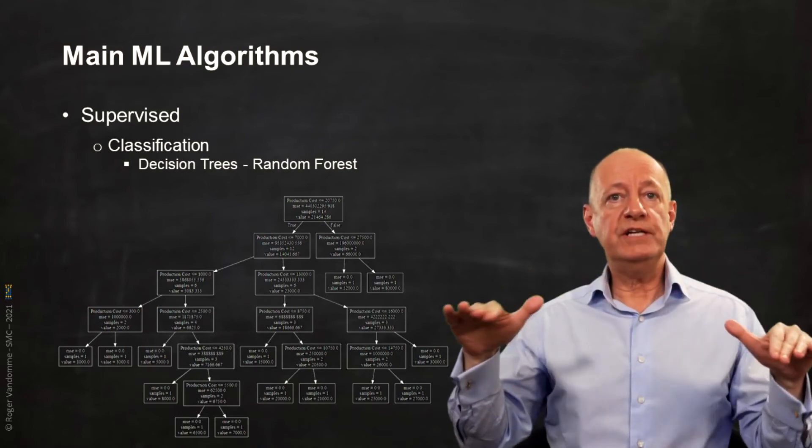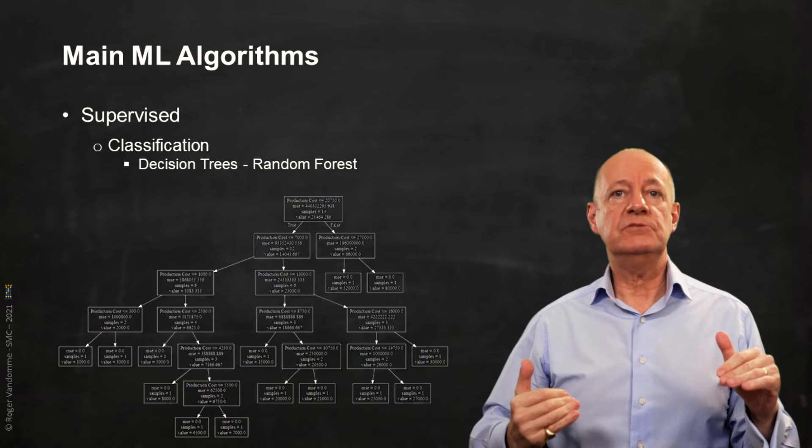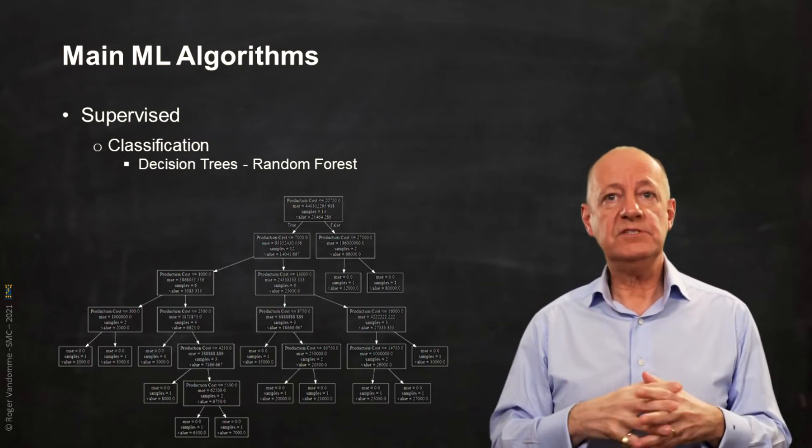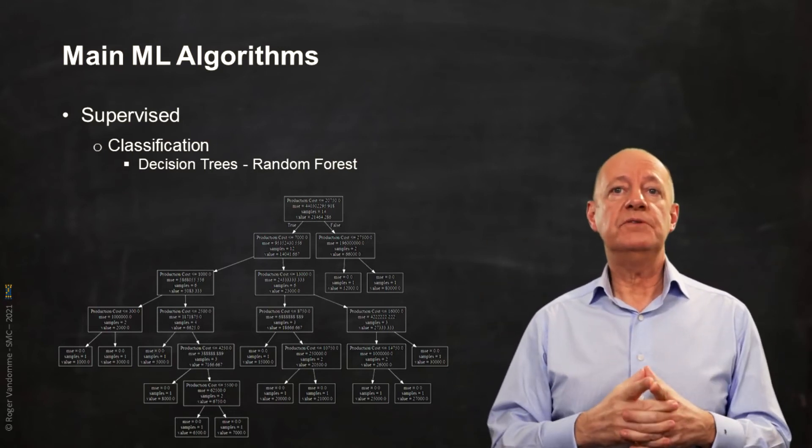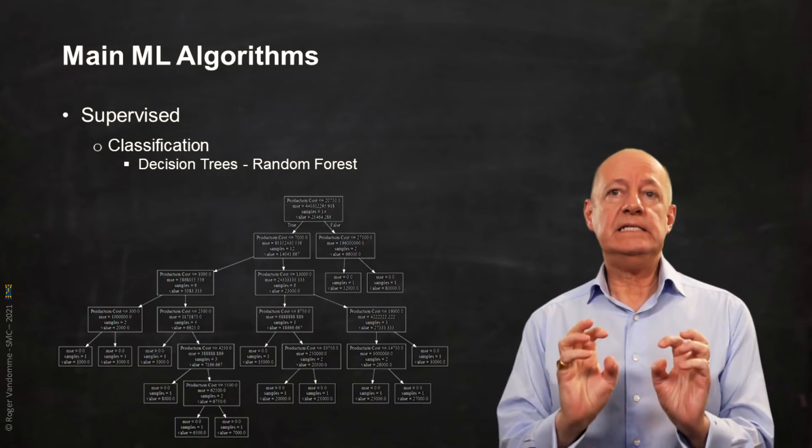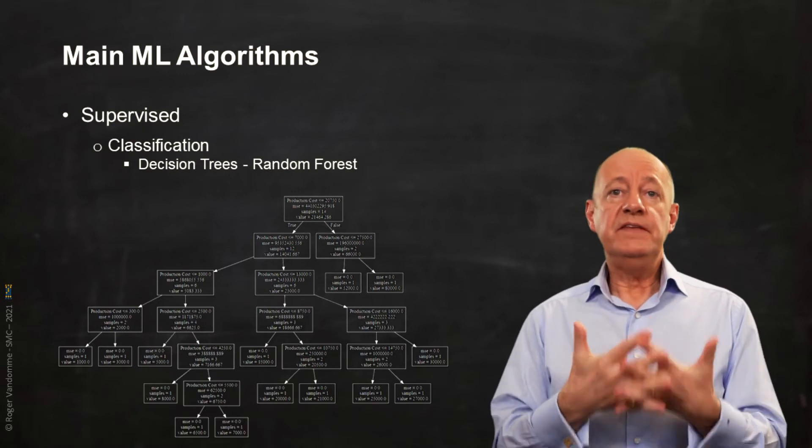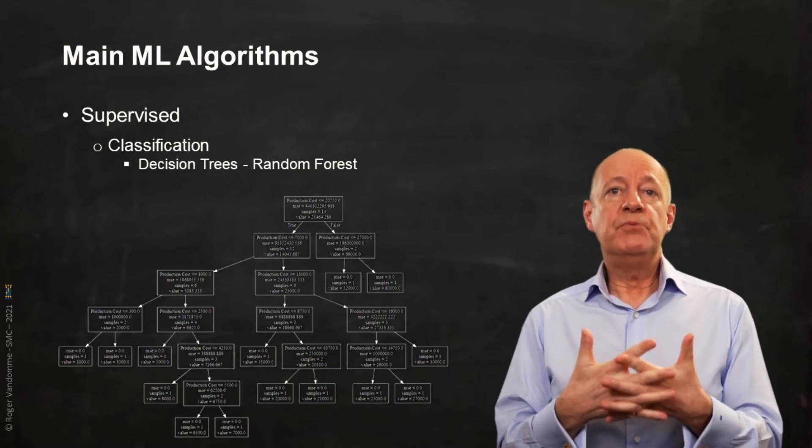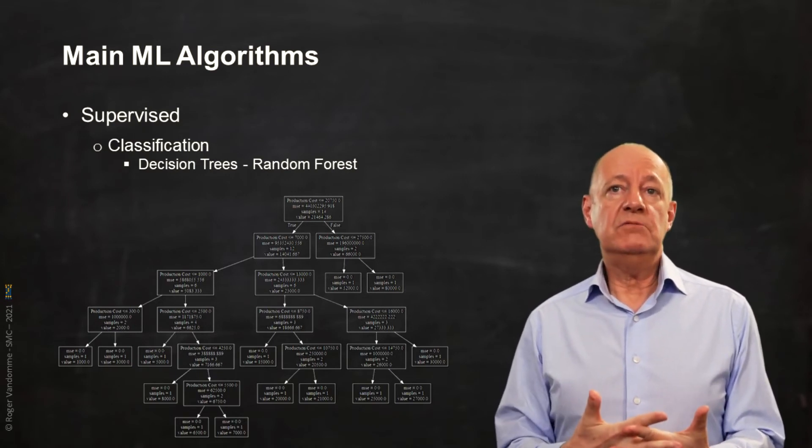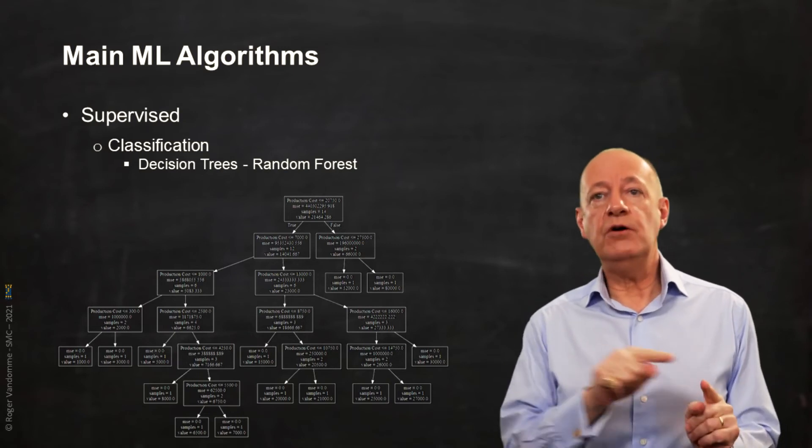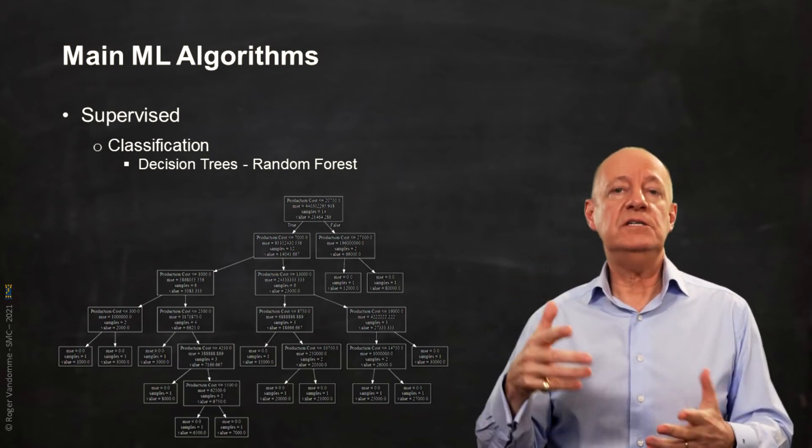These create branches, parents and children. Terminal nodes are called leaves. And the purpose of the algorithm is to get the purest population within a leaf. This will allow us to predict the likelihood of belonging to a class based on a series of conditions that are easy to explain.